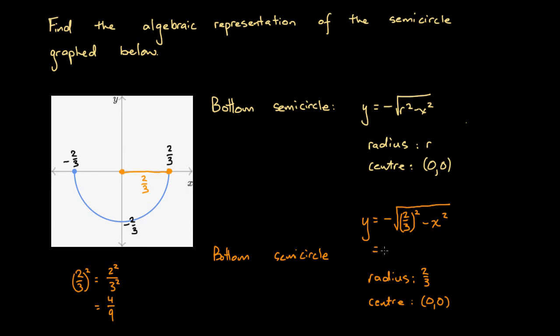So we can rewrite this expression as negative square root 4 over 9 minus x squared, which means the algebraic representation of the semicircle graphed is y equals minus square root 4 over 9 minus x squared.